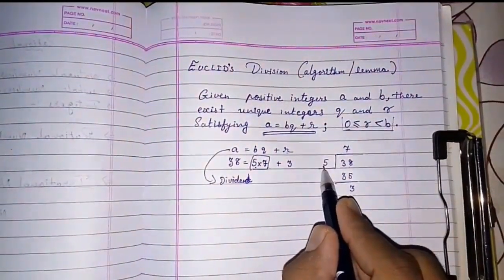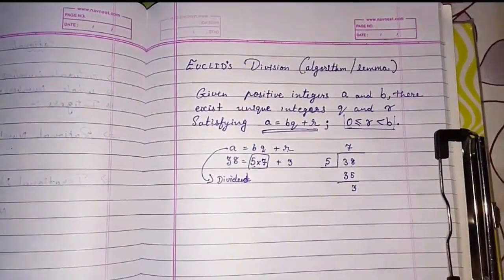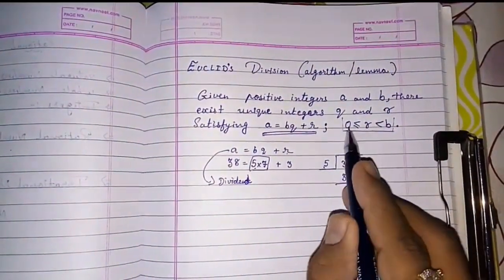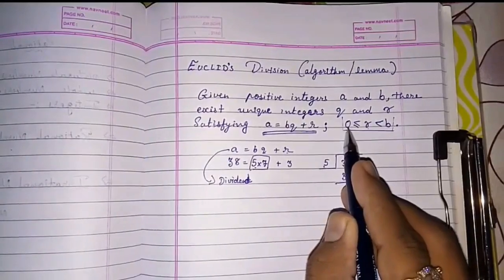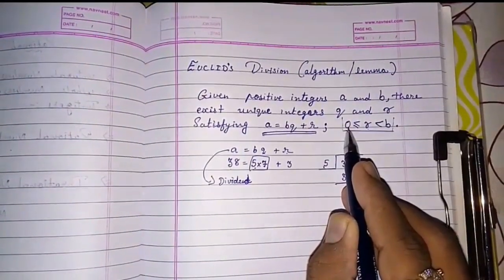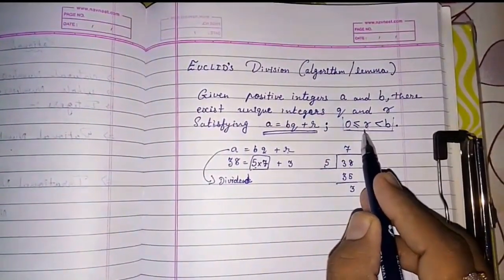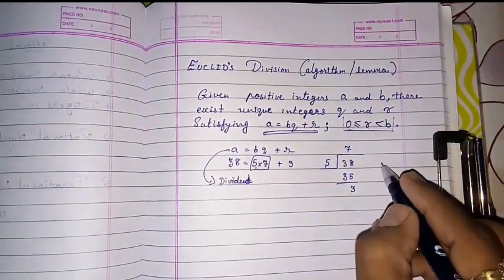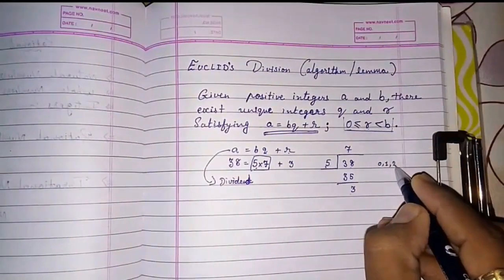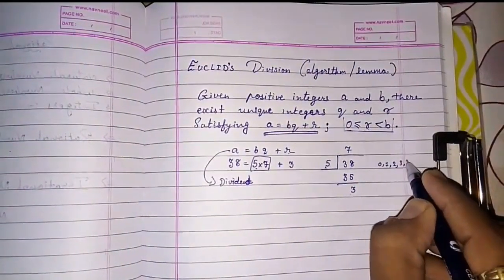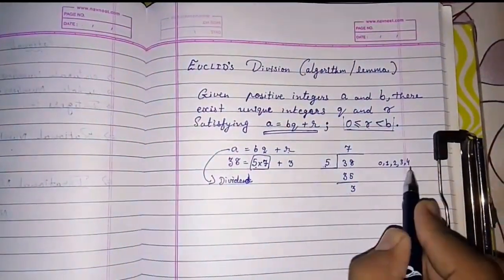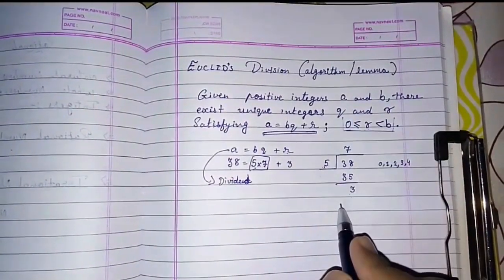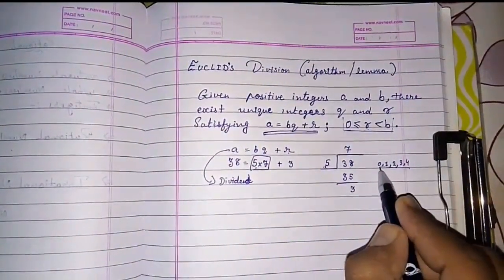If I am dividing any number with 5, what can be the possible remainders? Why they had written that r is equal to or greater than 0 and less than b. Means I am dividing with 5. So the possible remainder can be 0, 1, 2, 3, 4 means less than 5. You can see if 5 is there again we can divide. So these are the possible remainders.